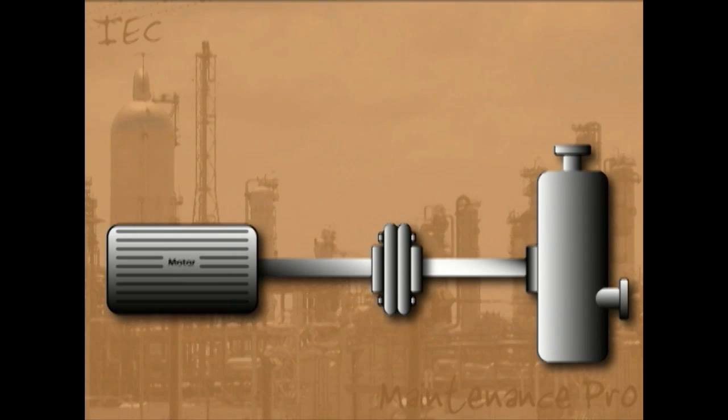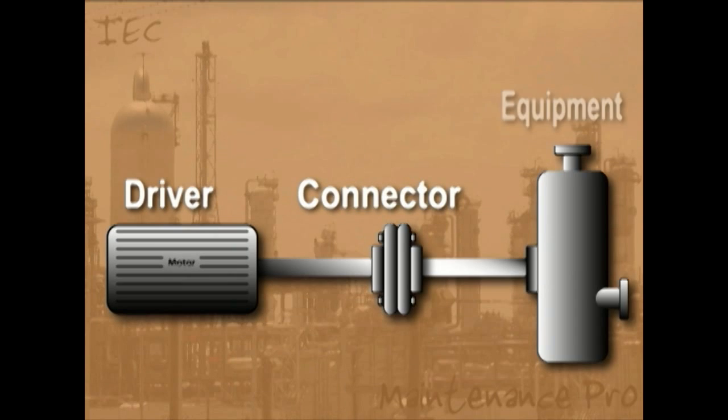Rotary equipment is distinguished by circular movement. All rotary equipment is made up of a driver, a connector, and the driven equipment.